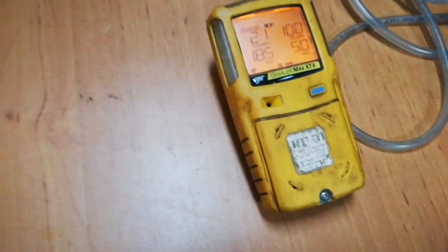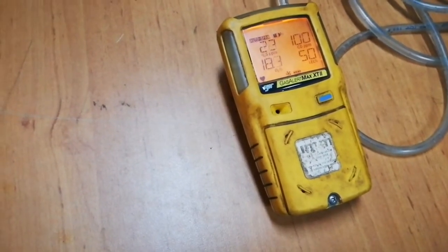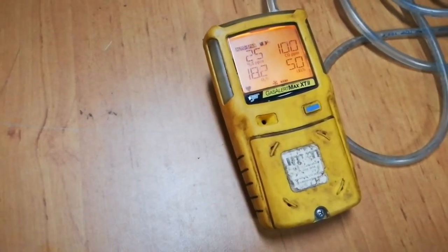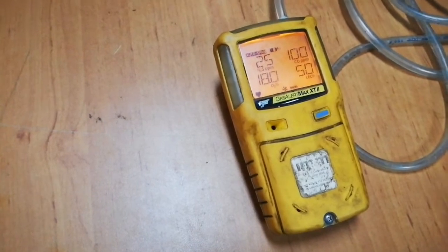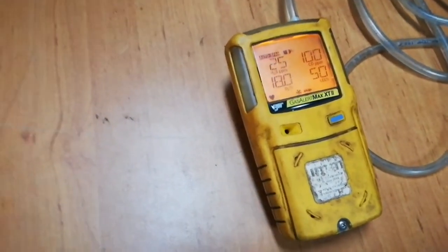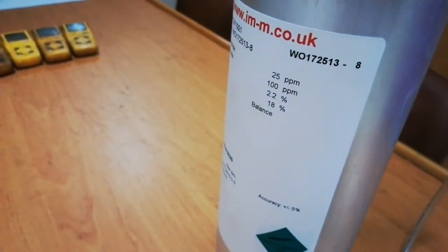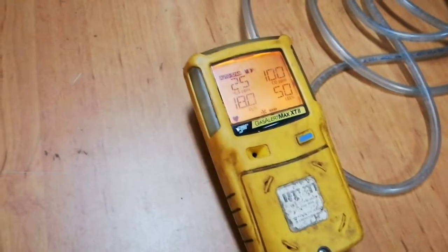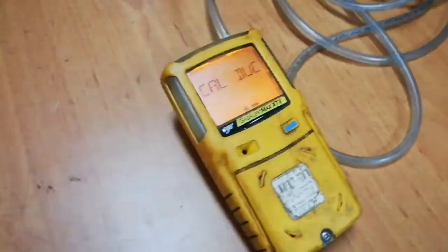I've already opened the span gas cylinder. Here you can see the reading, and this reading should be the same as the figures written on the span gas cylinder. Here you can see hydrogen sulfide 25 ppm, carbon monoxide 100 ppm—same figures you can see here. Once the calibration is done, you'll see this message.